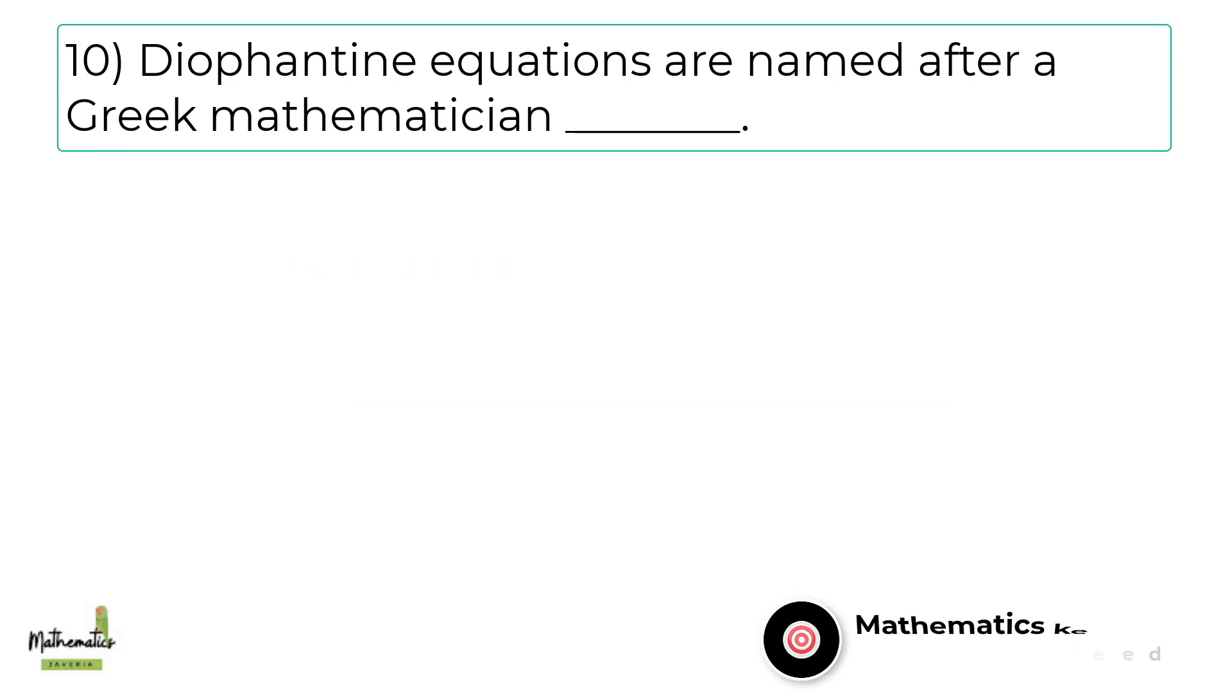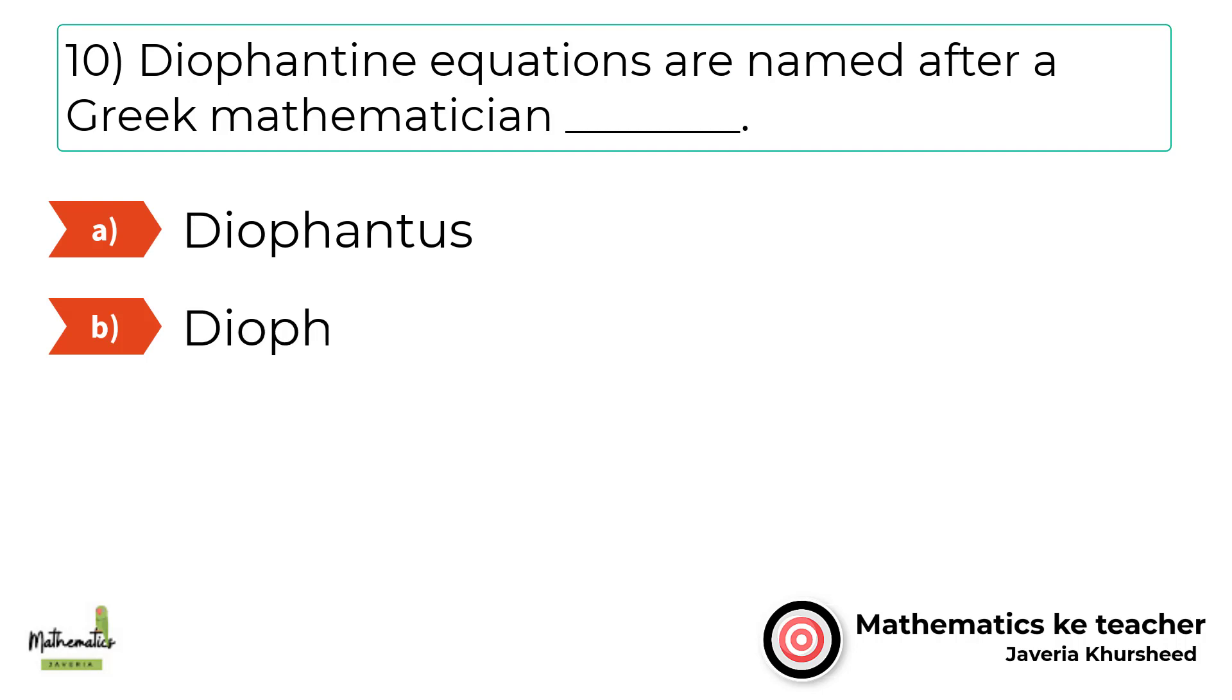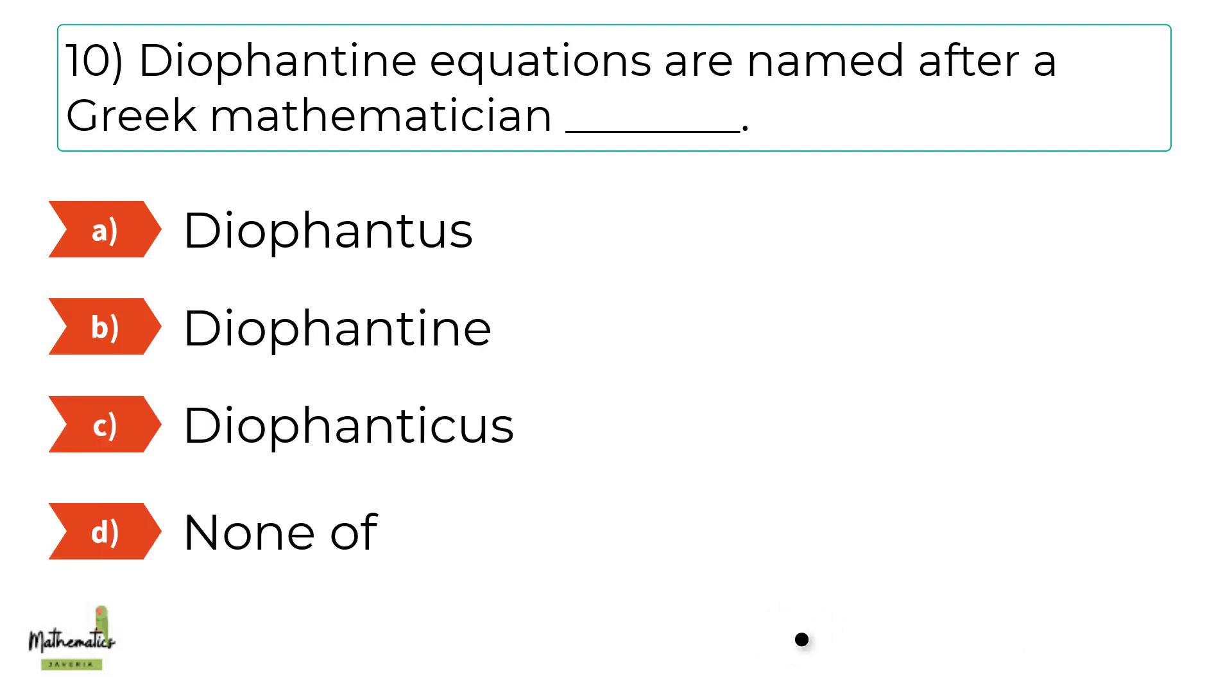Number 10. Diophantine equations are named after a Greek mathematician A, Diophantus. B, Diophantine. C, Diophanticus. D, none of these.